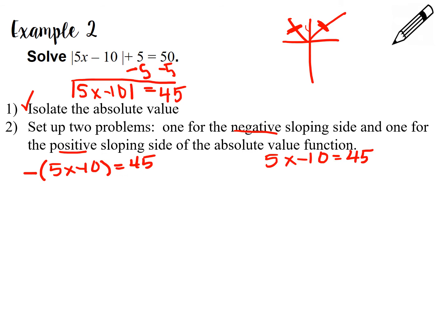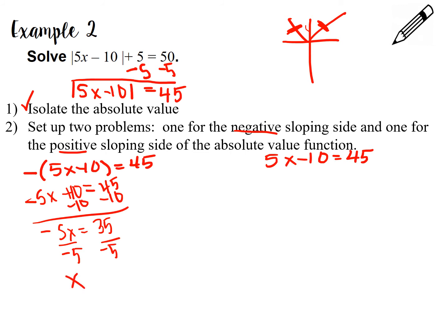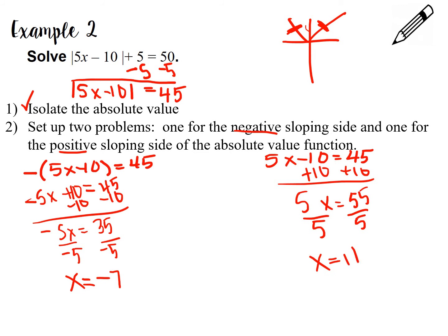Now solve both equations. For the left: distribute the negative to get negative 5x plus 10 equals 45. Subtract 10 from both sides: negative 5x equals 35. Divide by negative 5: x equals negative 7. For the right: 5x minus 10 equals 45. Add 10 to both sides: 5x equals 55. Divide by 5: x equals 11.